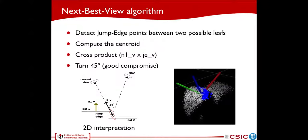Our approach has three steps. First, segmentation and plane fitting. Then, if a set of jump-edge points are detected between two possible adjacent leaves or inside a single one, it is a sign of a leaf misinterpretation. The center of those jump-edge points is computed to allocate a new center of the camera rotation for the next best view. The camera rotation axis is computed by means of the cross product between the surface normal vector of the foreground leaves and the jump-edge vector between the centroid and the current camera position. Finally, the camera is rotated plus or minus 45 degrees over the rotation axis depending on whether the jump-edge points are located on the left or the right side of the camera point of view.